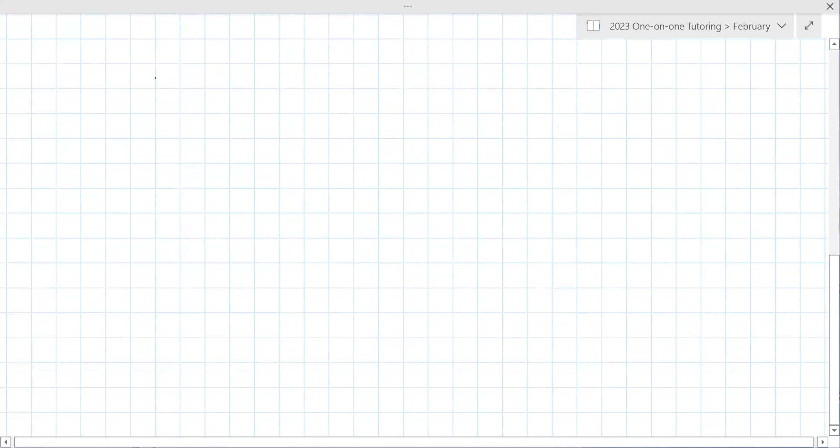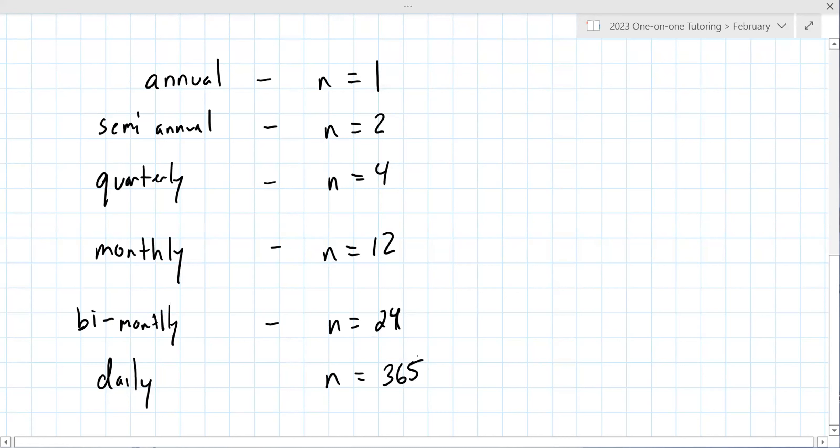Here's the way it goes. If it's annual, that's n equals 1. Semi-annual is n equals 2. Quarterly is n equals 4. Monthly is n equals 12. This would be rare, but bi-monthly would be n equals 24. That means twice a month. The next one is daily, which is 365. You probably know these, but seeing them in a list would help.